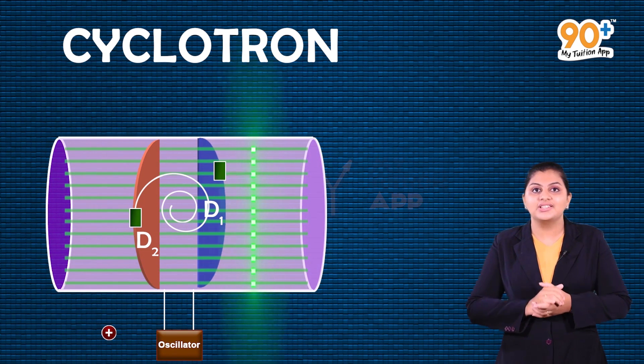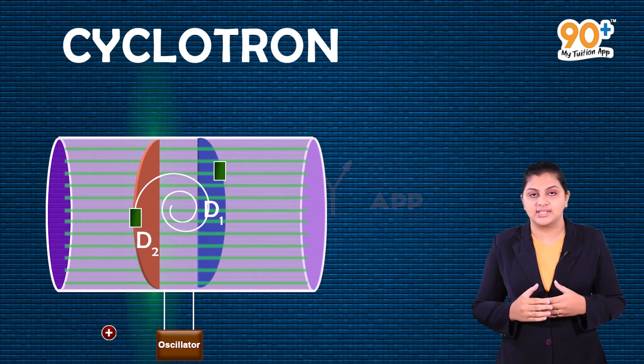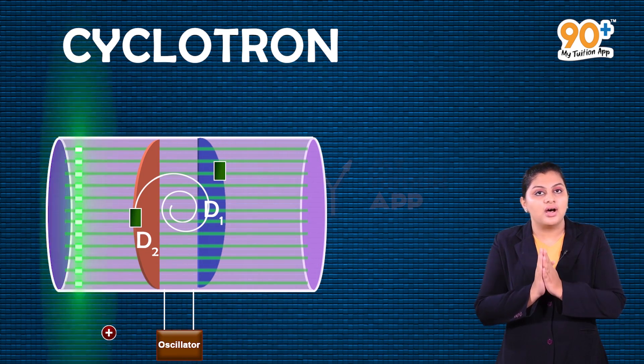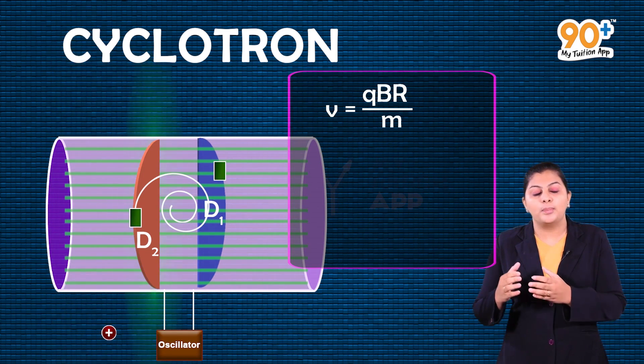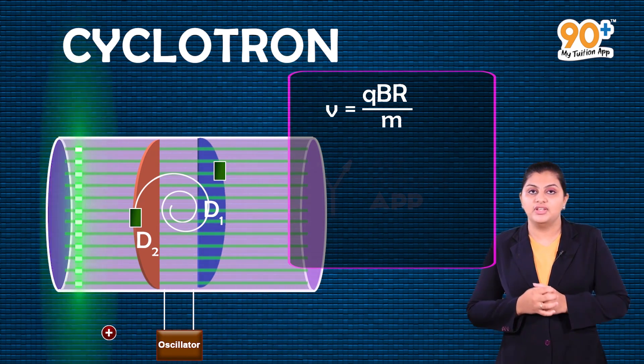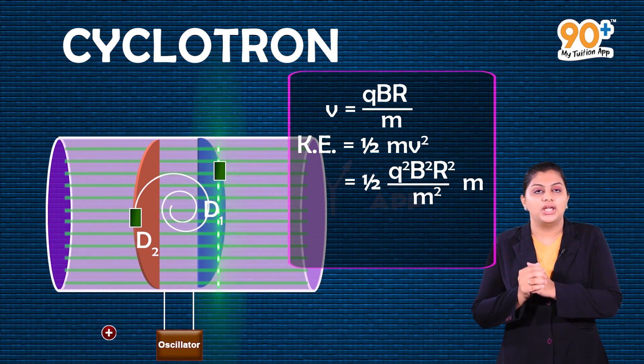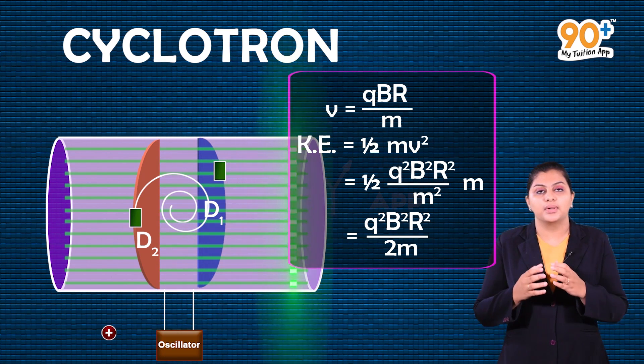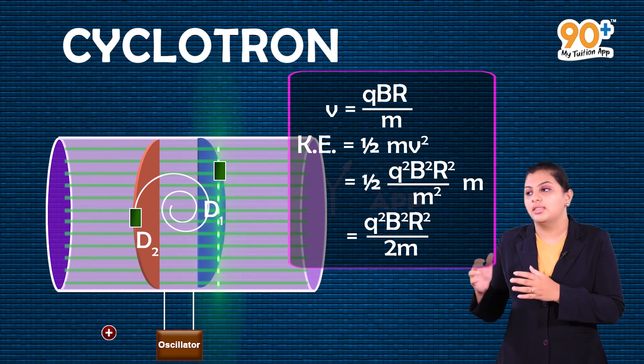For the exiting particle with velocity v and exit port trajectory radius r, we use the circular motion equation v equals qBr by m. The kinetic energy is half mv squared, which equals q squared B squared r squared divided by 2m. This is the equation for the kinetic energy of the exiting particle.